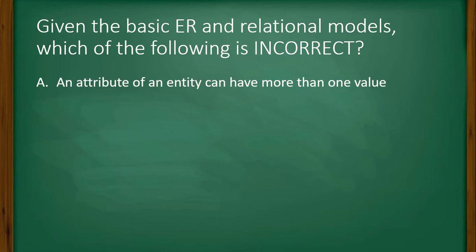So what are the options? Option A is an attribute of an entity can have more than one value. An attribute of an entity can be composite.